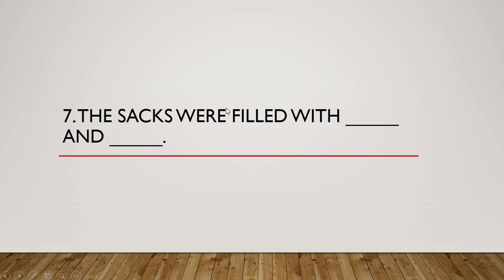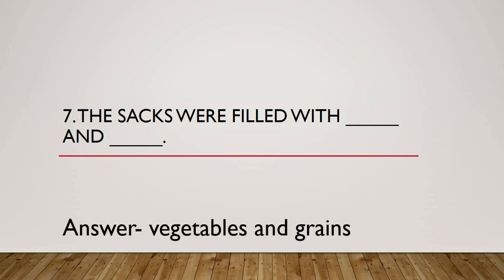Fill in the blanks Question 7: The sacks were filled with dash and dash. Sacks are big cloth containers in which grains are filled. What was inside the sacks? The answer is vegetables and grains. Please repeat: The sacks were filled with vegetables and grains. Note the pronunciation — it is 'veg-e-ta-bles,' not 'veggie-tables,' and the second 'e' is silent.